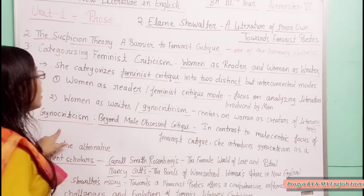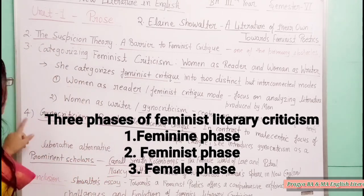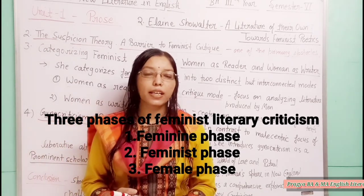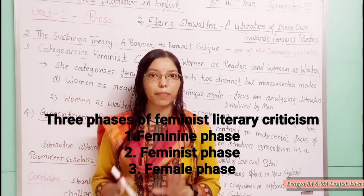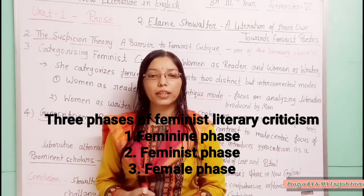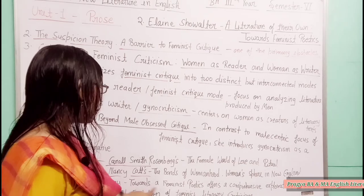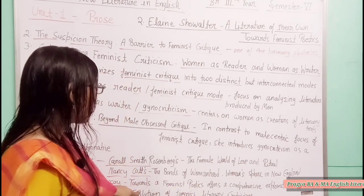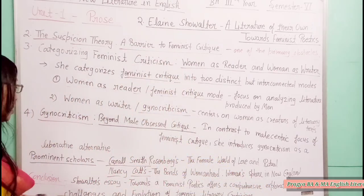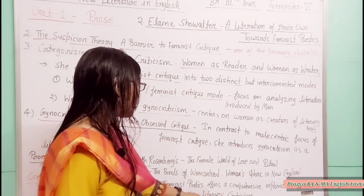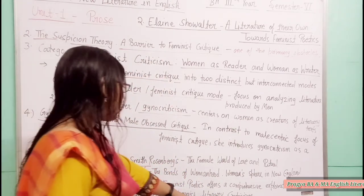Elaine Showalter outlines three phases of feminist literary criticism. The first is the feminine phase, the second is the feminist phase, and the third is the female phase. This framework offers a comprehensive exploration of the challenges and evolution of feminist literary criticism.